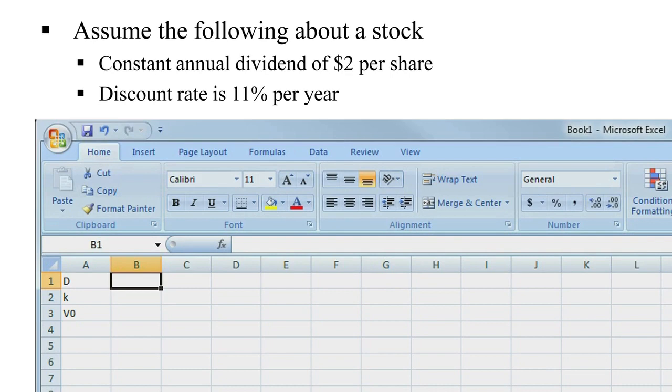In this example, we used $2 per share for the dividend. I'm going to just show both decimal places there. We used 11% as the discount rate. I'm going to express this as a percentage.